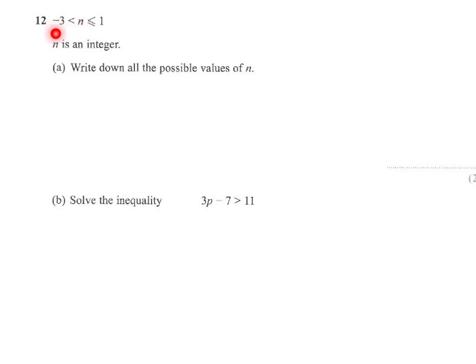So we're told that n is greater than minus 3 and less than or equal to 1. n is an integer and we're to write down all the possible values of n.